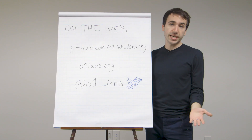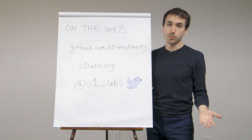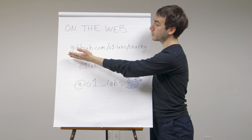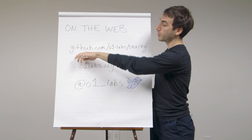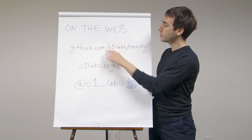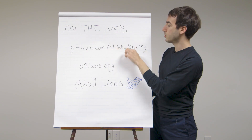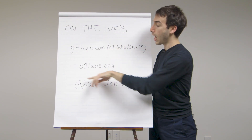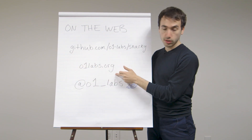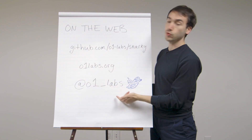That was a taste of what it's like programming in Snarky for verifiable computation. All the code is available on GitHub at github.com/o1-labs/snarky. Our website is at o1labs.org, and you can follow us on Twitter at o1_labs.